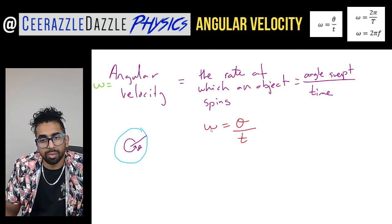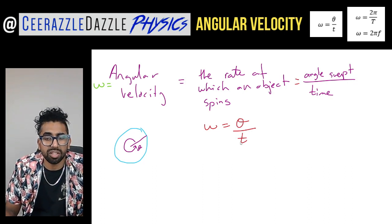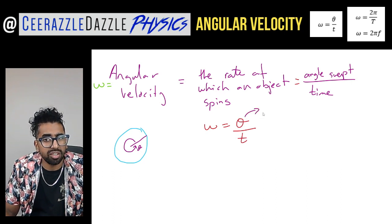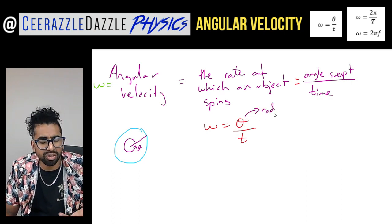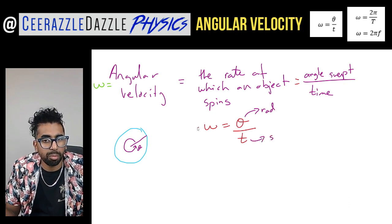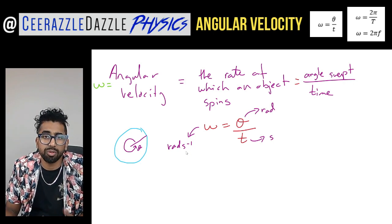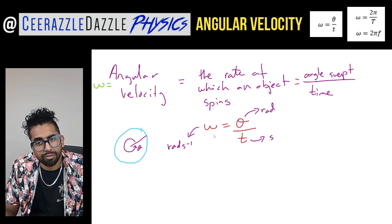Now we know omega equals angle divided by time taken, let's talk about units. The angle is measured in radians — we'll use radians from now on — and time is in seconds. Therefore omega is measured in radians per second, or rad s⁻¹.